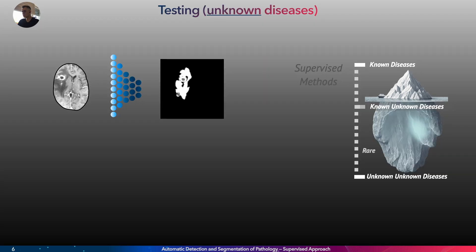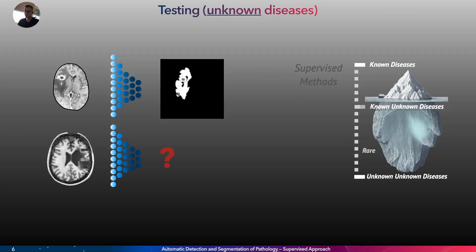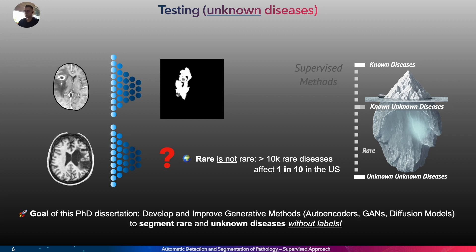However, if the disease is rare or unknown, the network would likely fail to detect it, and since there are many rare diseases, it is infeasible to collect and annotate all of them. This is the main focus of the QFT dissertation: to develop and improve methods that are able to detect and segment rare diseases without any labels.